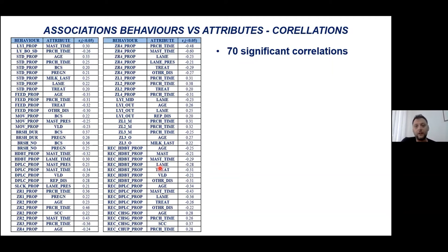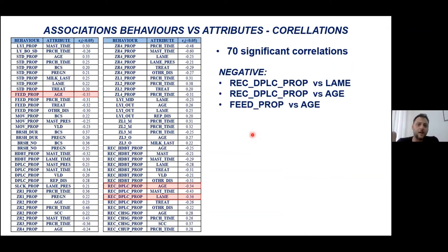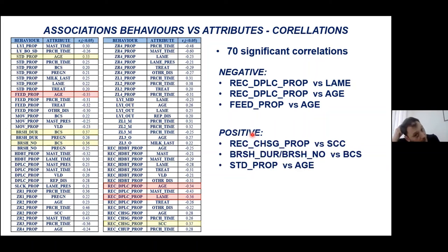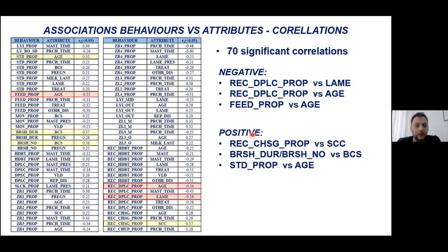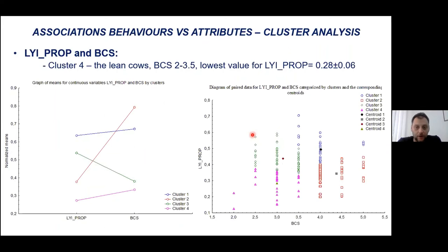From the correlation analysis we found 70 significant correlations between attributes and behavior. Most notably, lame animals and older animals were less displaced by others. Time spent at the feed banks was negatively correlated with age. With positive correlations, we found that animals with a history of high somatic cell counts were more chased by other individuals. Usage of the brush was positively correlated with body condition score, and standing duration was also higher for older animals.